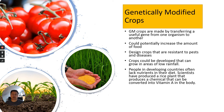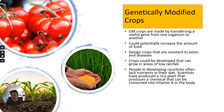The second example is genetically modified crops. This topic will come up later in relation to variation, inheritance, and genetics, but I'll cover it now. GM crops are made by transferring a useful gene from one organism to another. This could potentially increase the amount of food produced — you can design crops that are resistant to pests and diseases, or develop them to grow in areas of low rainfall. People in developing countries often lack nutrients in their diet, and scientists have produced, for example, a rice plant called golden rice that produces a chemical that can be converted into vitamin A in the body.